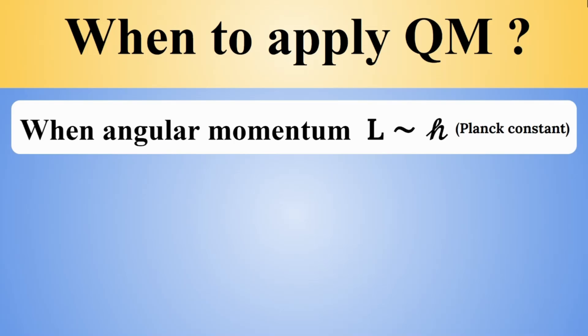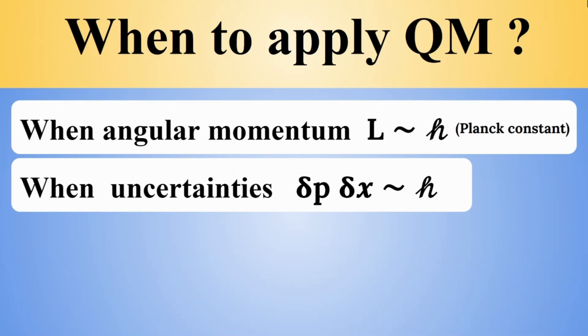Next, we will learn more about uncertainty principle later as well, but uncertainties in the context have to do with the products of uncertainties. For instance, the uncertainty in the momentum of a particle and the uncertainty in the position of the particle, if it's comparable to Planck's constant, is also going to give you the realm of quantum physics.